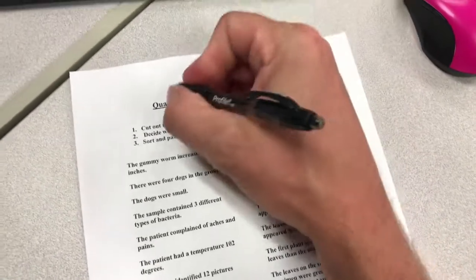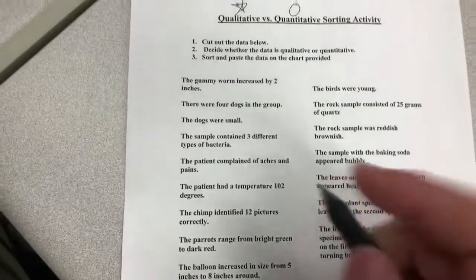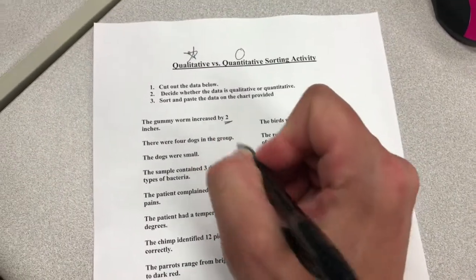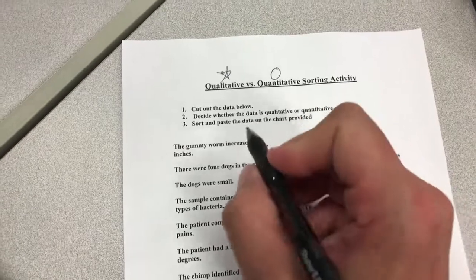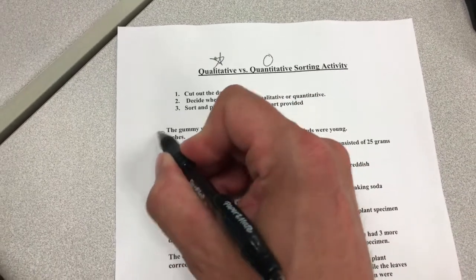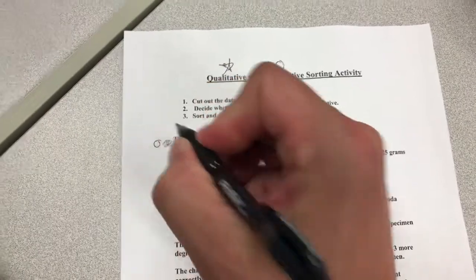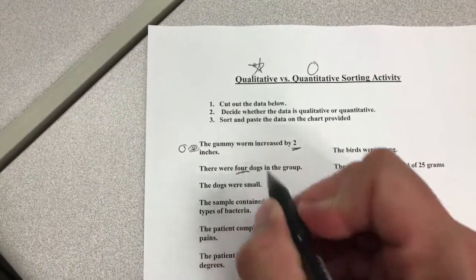Let me go through these examples in case you get stuck. Qualitative — star them; quantitative — circle them. 'The gummy worm increased by two inches' — that tells you how much, so that is quantitative; give it a circle. 'There were four dogs' — you see the number, it tells how many, so that's quantitative — circle it.